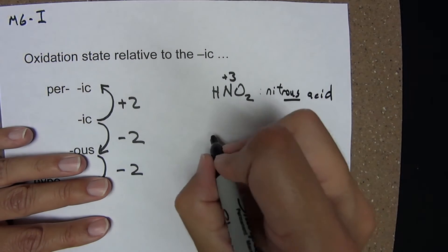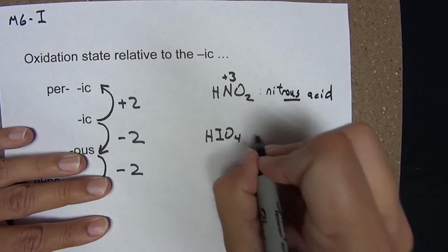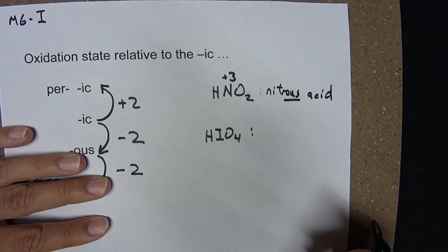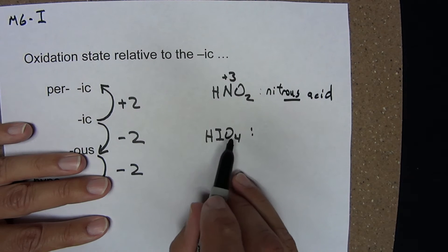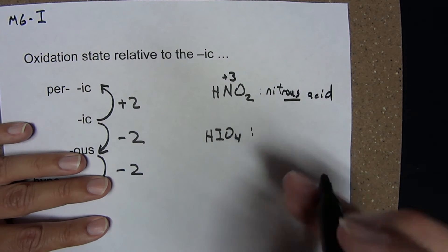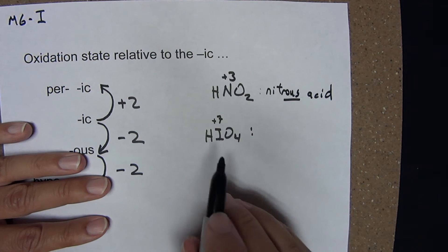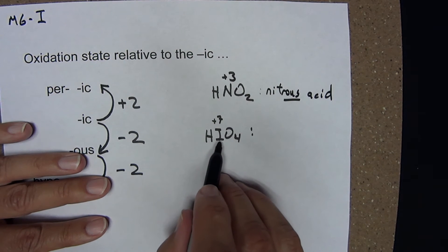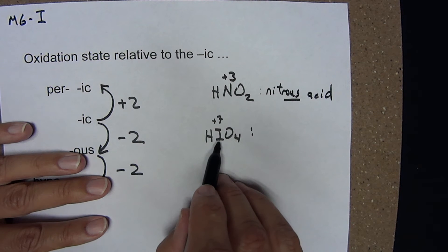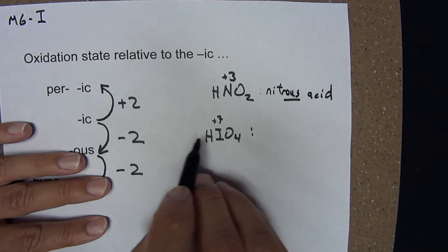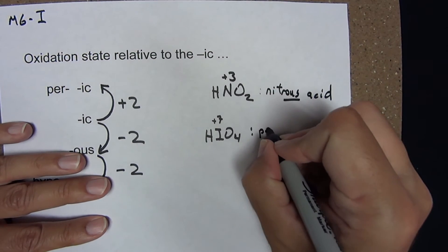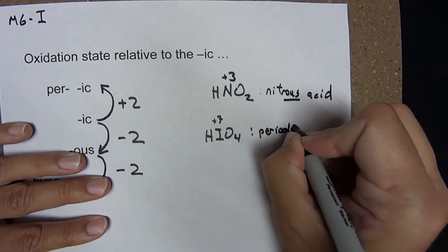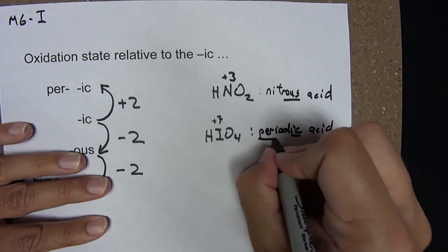Let's try another one: HIO4. We identify the oxidation state of iodine: minus 8 plus 1 means iodine must be plus 7. Iodine is in group 7, so this is a halogen. Recall the ic acid for the halogens is plus 5. I'm 2 more than the ic, which makes this the per-ic acid. This is periodic acid.